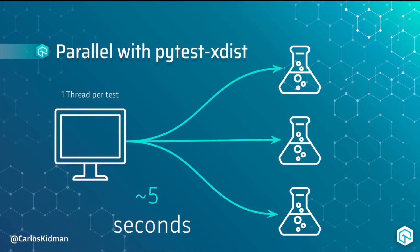When it comes to PyTest, we have a few plugins we can use to achieve parallel execution. PyLenium already includes the PyTest xdist plugin, which runs tests in parallel by distributing each test to its own thread. In other words, each test would run at the same time using its own thread, and the execution time would be closer to 5 seconds. This may not seem like a lot, but when you have hundreds of tests, the time saved adds up quickly.